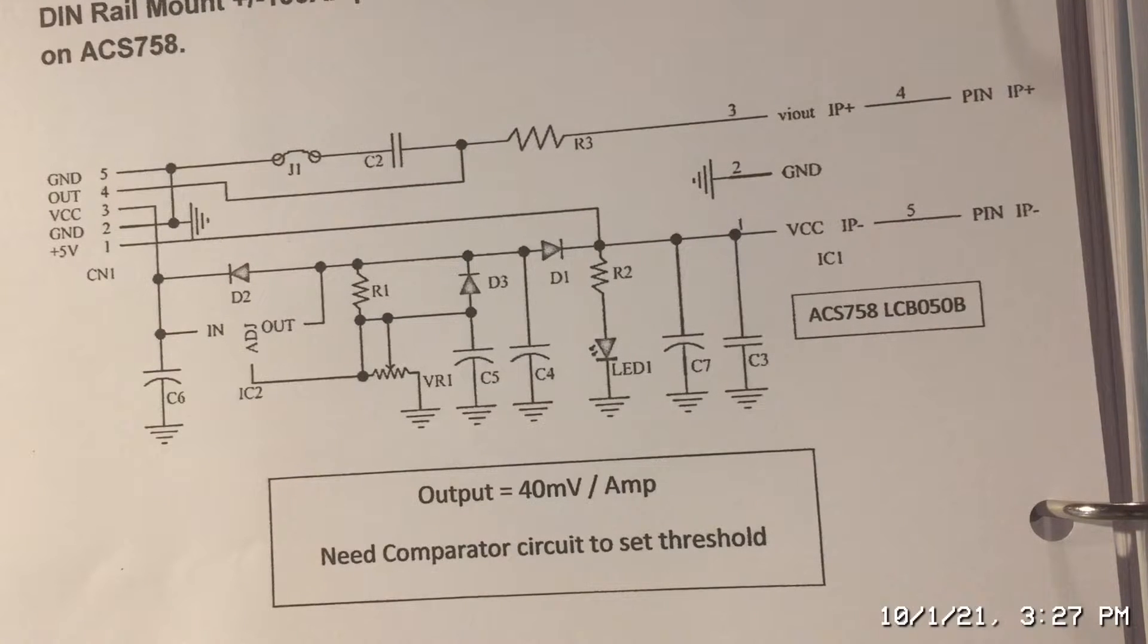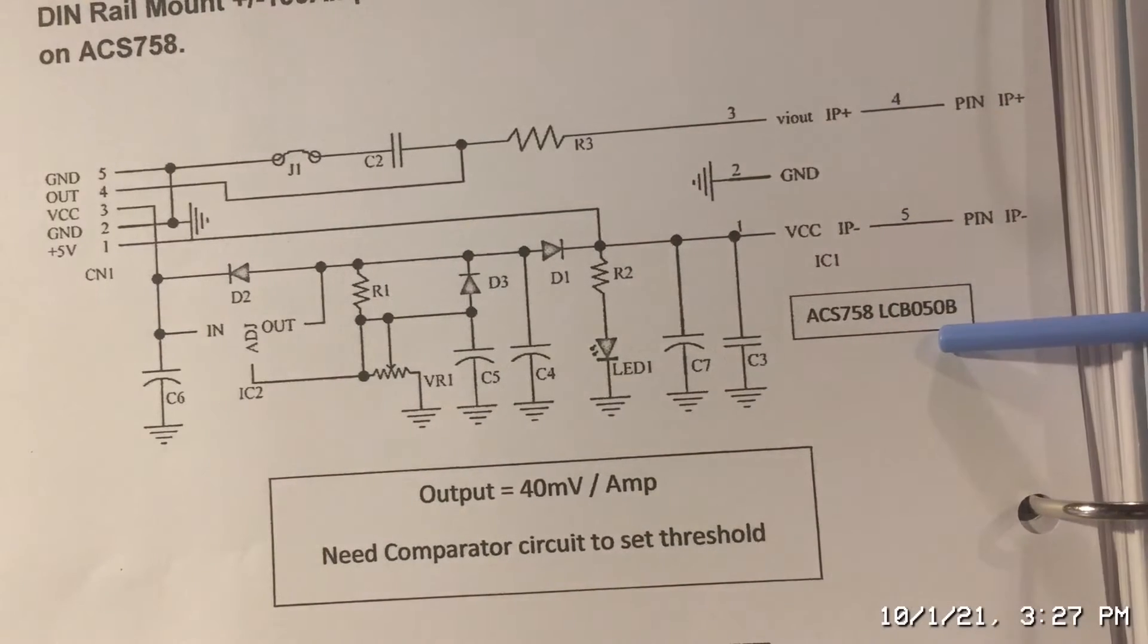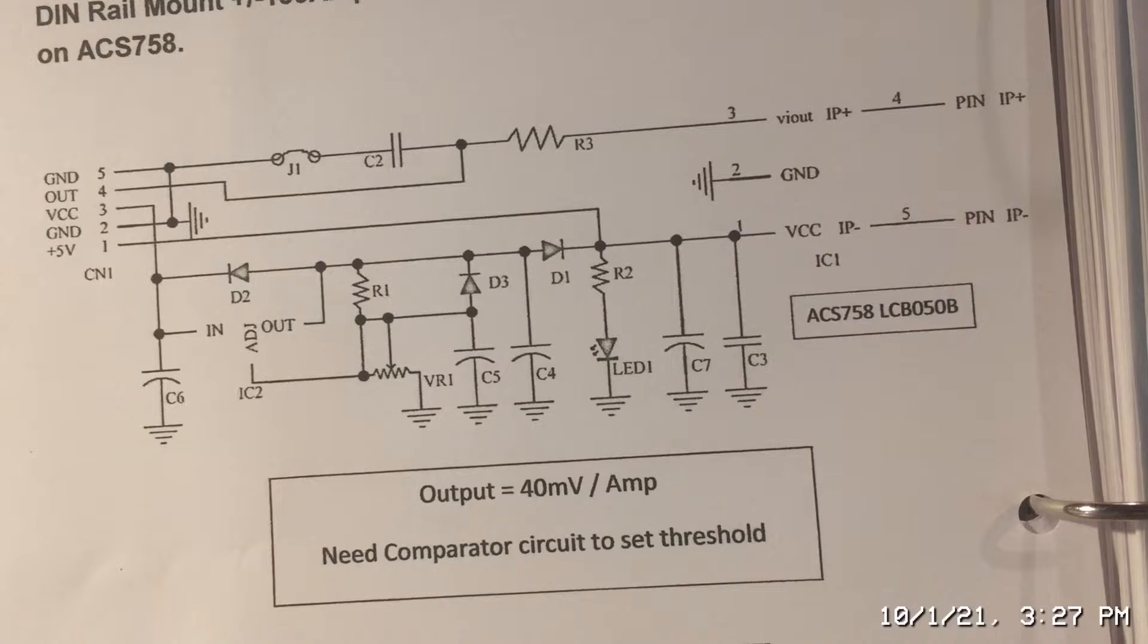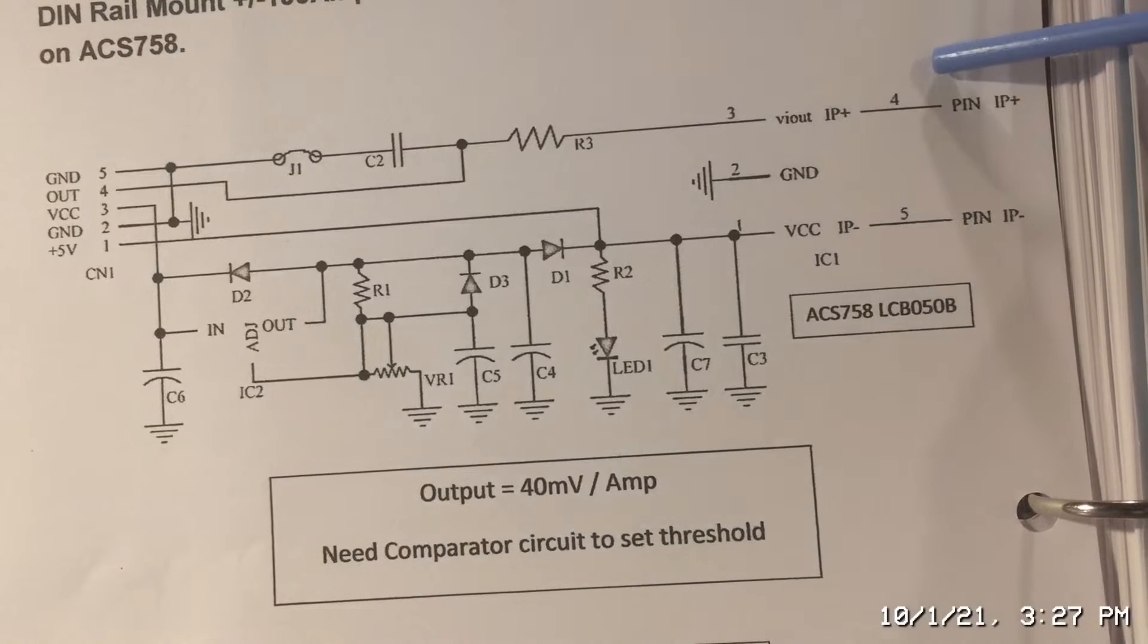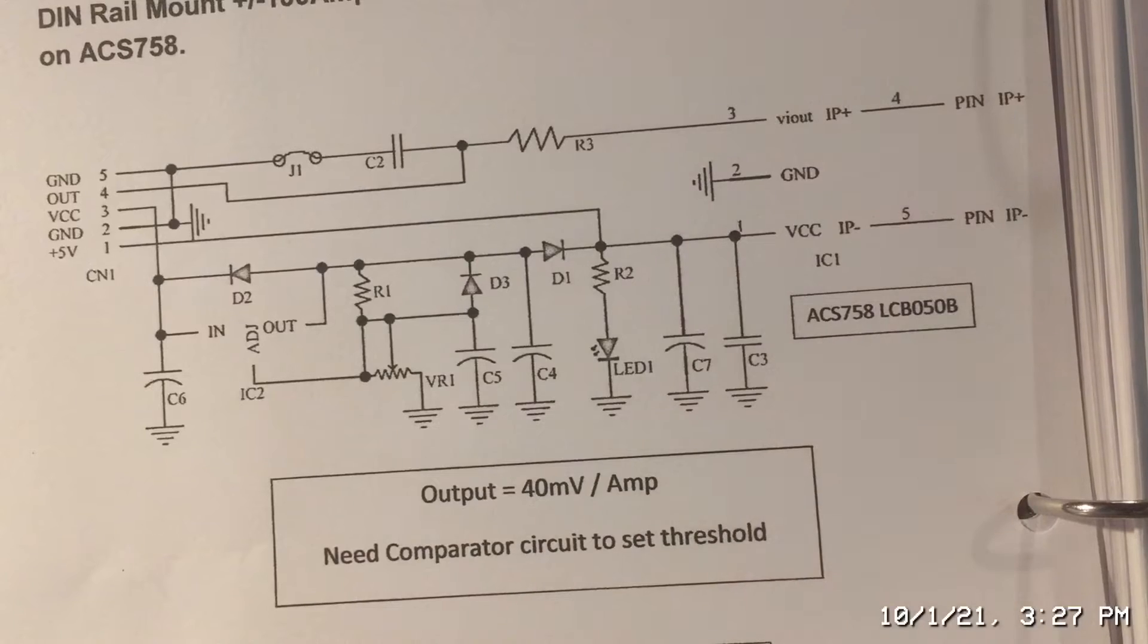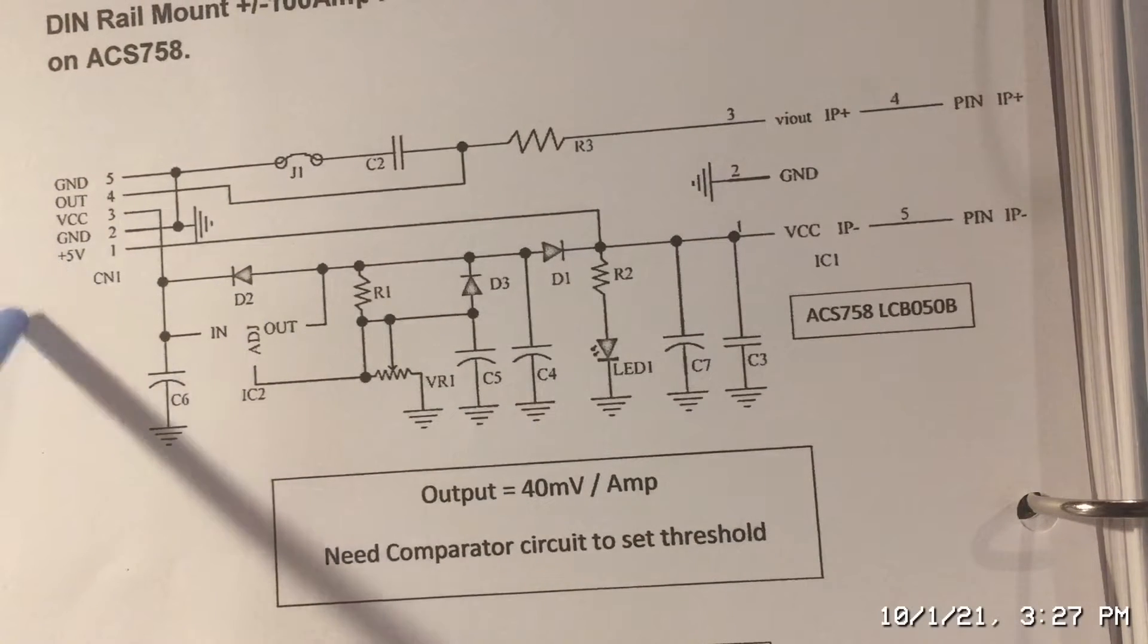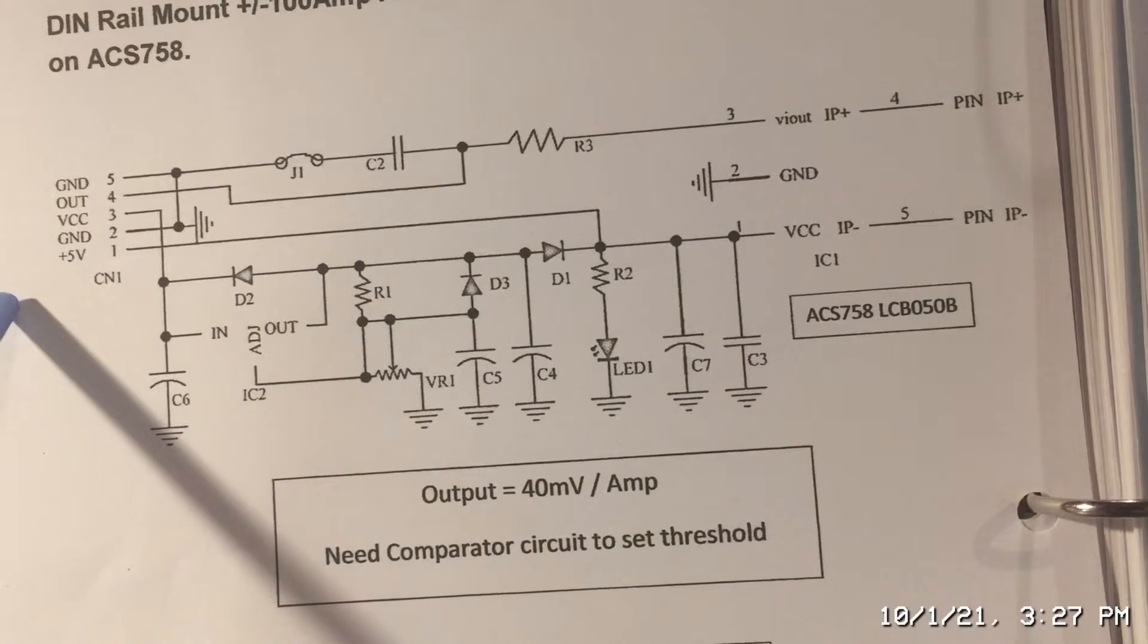All right so now I want to talk about the schematic. On one side of the module you have two heavy screw terminals. This is to apply your DC voltage so this would be for the plus side this is for the minus side. And then on the other side of the module you have a five pin terminal block.